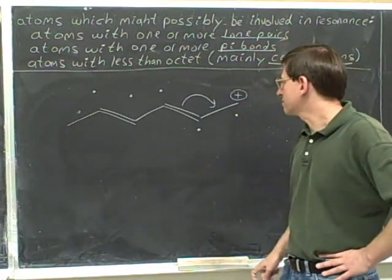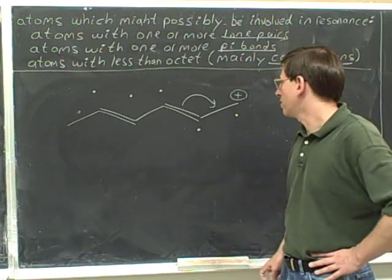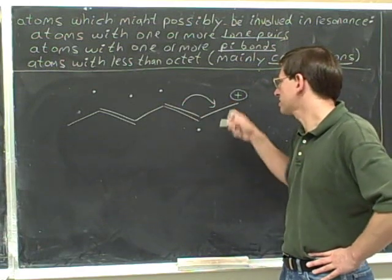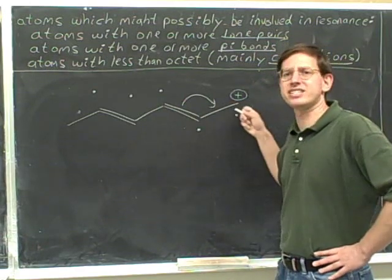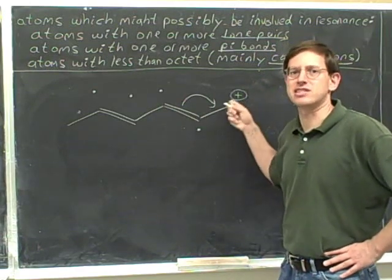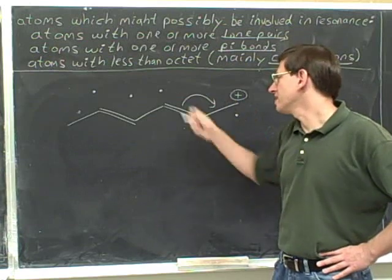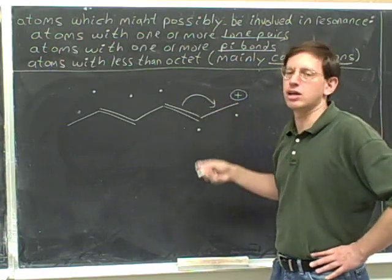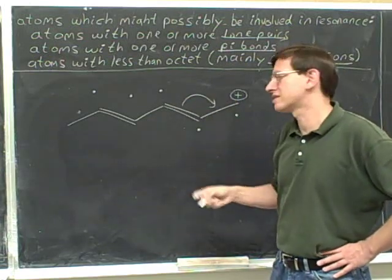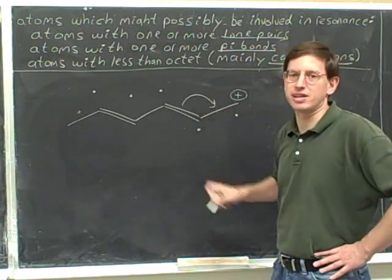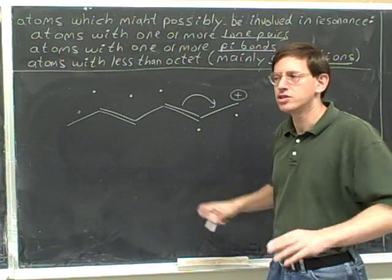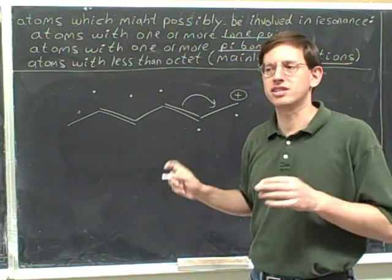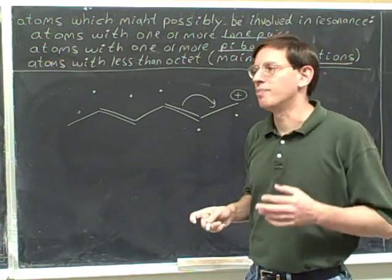The atoms involved here are this carbon, this carbon, and this carbon — and they've all got dots. So this is legal. If any of the atoms involved in this arrow had not had dots, then this would not be a legal arrow.